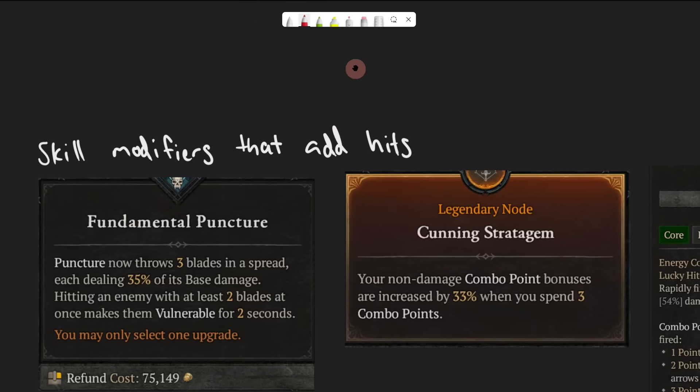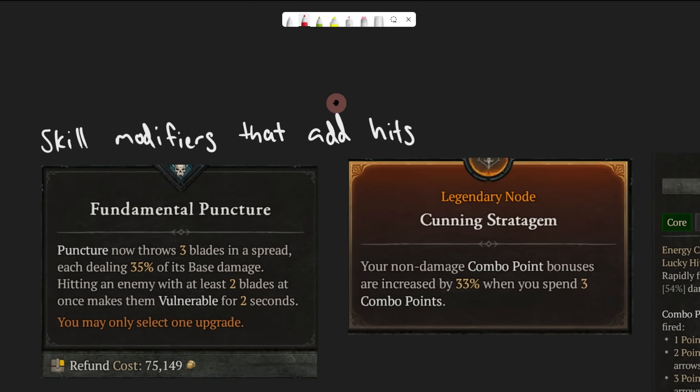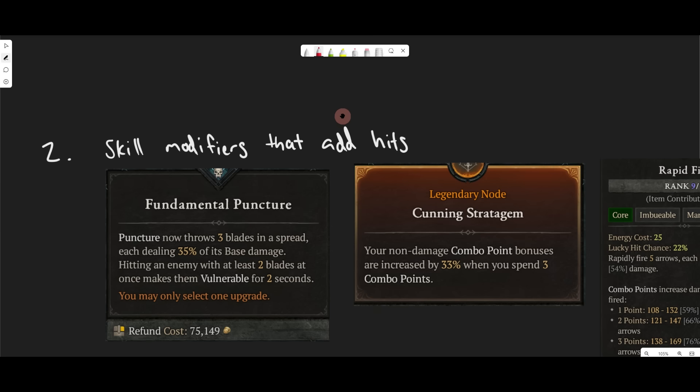Secondly, you can see, are there any Skill Modifiers that add hits, or any Skills that just hit more often than other Skills? For example, Puncture, you can get Fundamental Puncture, where Puncture now throws three Blades in a spread. Instead of just shooting out one Blade at a time, it shoots out three Blades at a time, which effectively triples the amount of Lucky Hits that you're going to get, because every Blade has the same Lucky Hit chance that just having one of them does. I don't know if this is an oversight of Blizzard, but it seems to be the way it works.